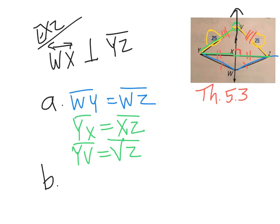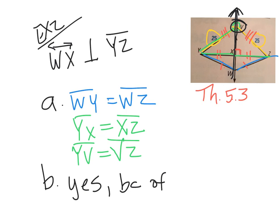For part B, it asks: is V on WX? WX was this ray going up and point V was out by itself. The answer is yes — because of the converse of the perpendicular bisector theorem, Theorem 5.3.